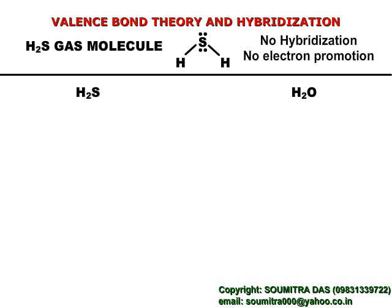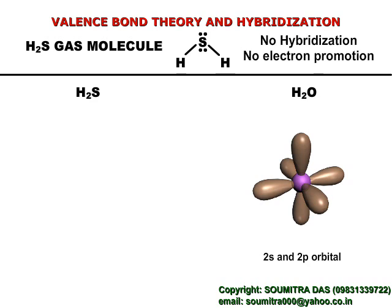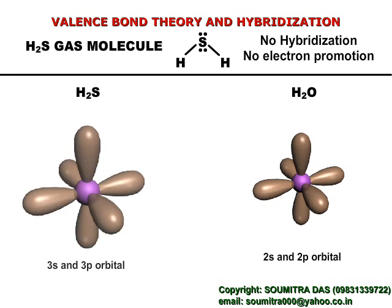The reason is that in H₂O the central atom is oxygen which has 2p orbital in its valence shell, and in H₂S the central atom is sulfur which has 3p orbital in its valence shell. We all know that 3p orbital is greater in size than 2p orbital.